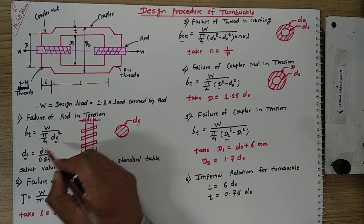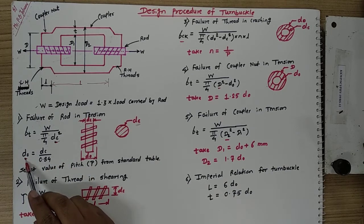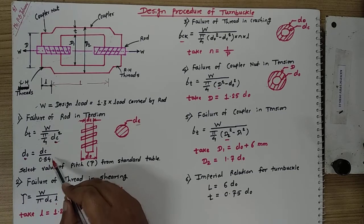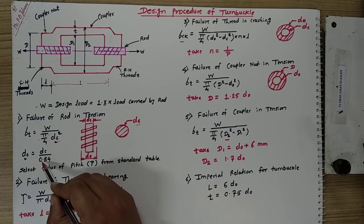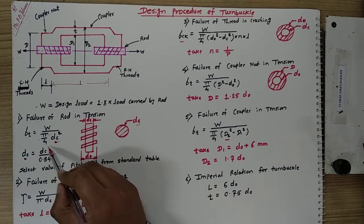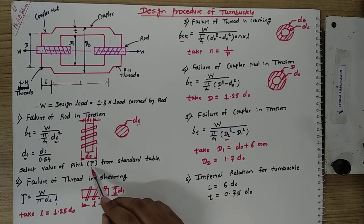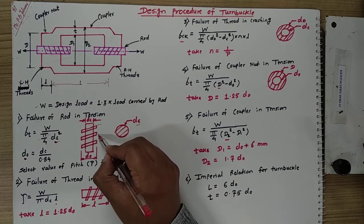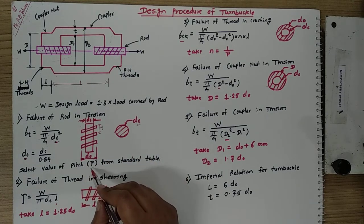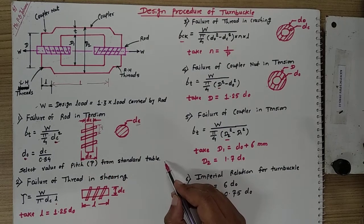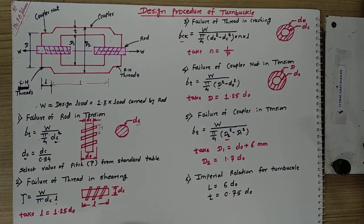Once the core diameter of the screw is obtained, we calculate the nominal diameter DO, which equals DC divided by 0.84. This formula is used for square type metric thread. From that equation we obtain the value of DO. Once DC and DO are obtained, we select the pitch from a standard table — pitch being the consecutive distance between two threads — using the values of DC and DO.